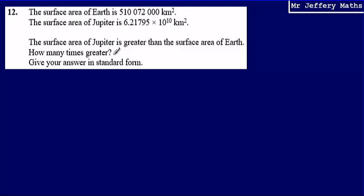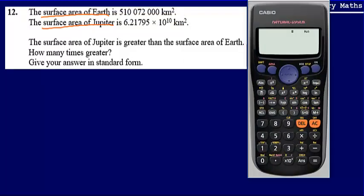So in order to work out how many times greater the surface area of Jupiter is compared to the surface area of Earth, what we're going to have to do is divide the surface area of Jupiter by the surface area of Earth. So to do that, we're going to use a calculator.